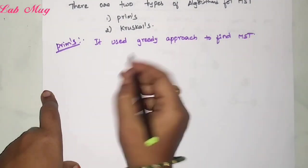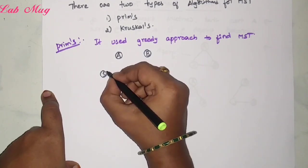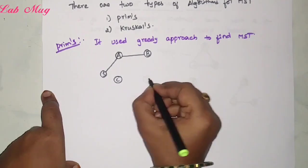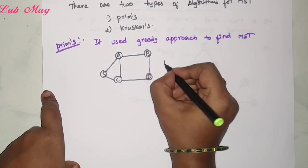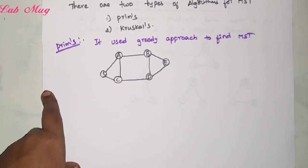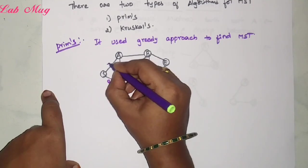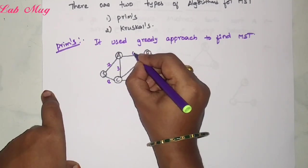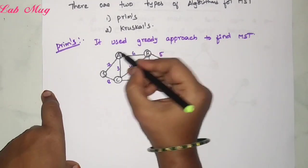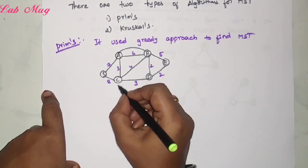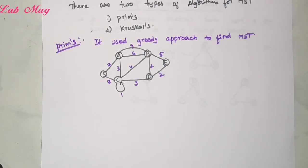I want to take one graph with vertices A, B, S, C, D, and E with connections between them. This graph has edges with weights: 8, 7, 3, 6, 4, 3, 2, 5, 5, and 2. There is one parallel edge from A to B and one loop from C to C. The weight for the loop at C is 1 and the parallel edge weight is 9. Now from this graph, we will calculate the minimum spanning tree.